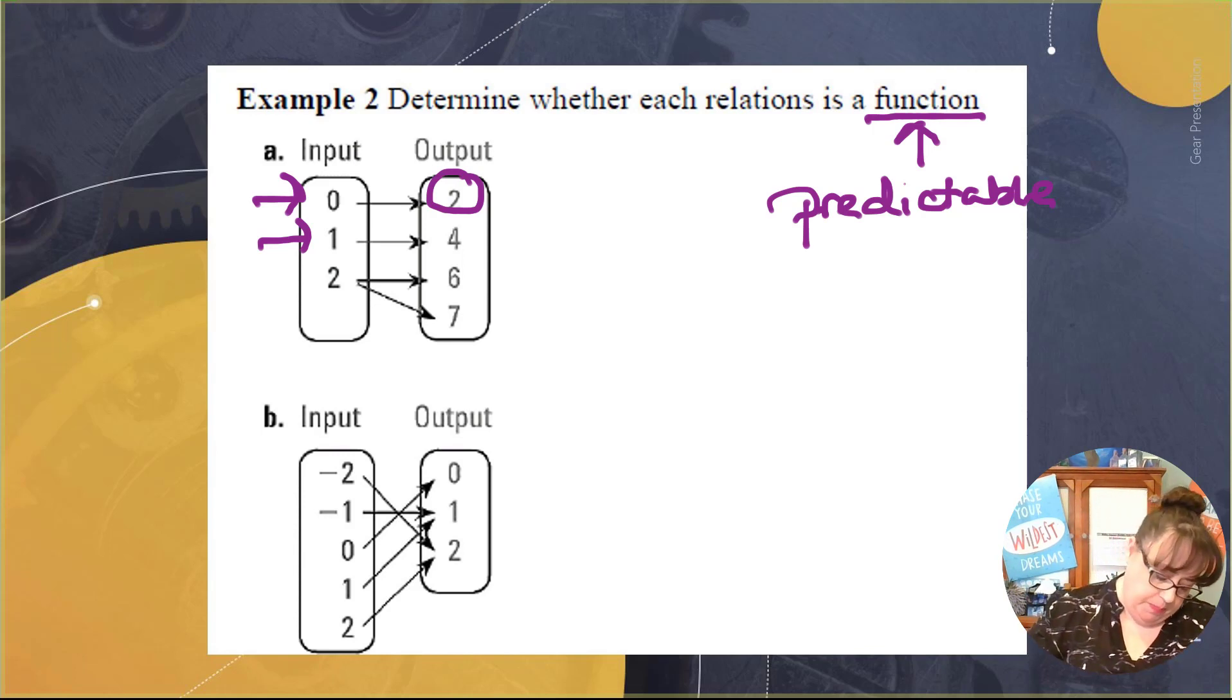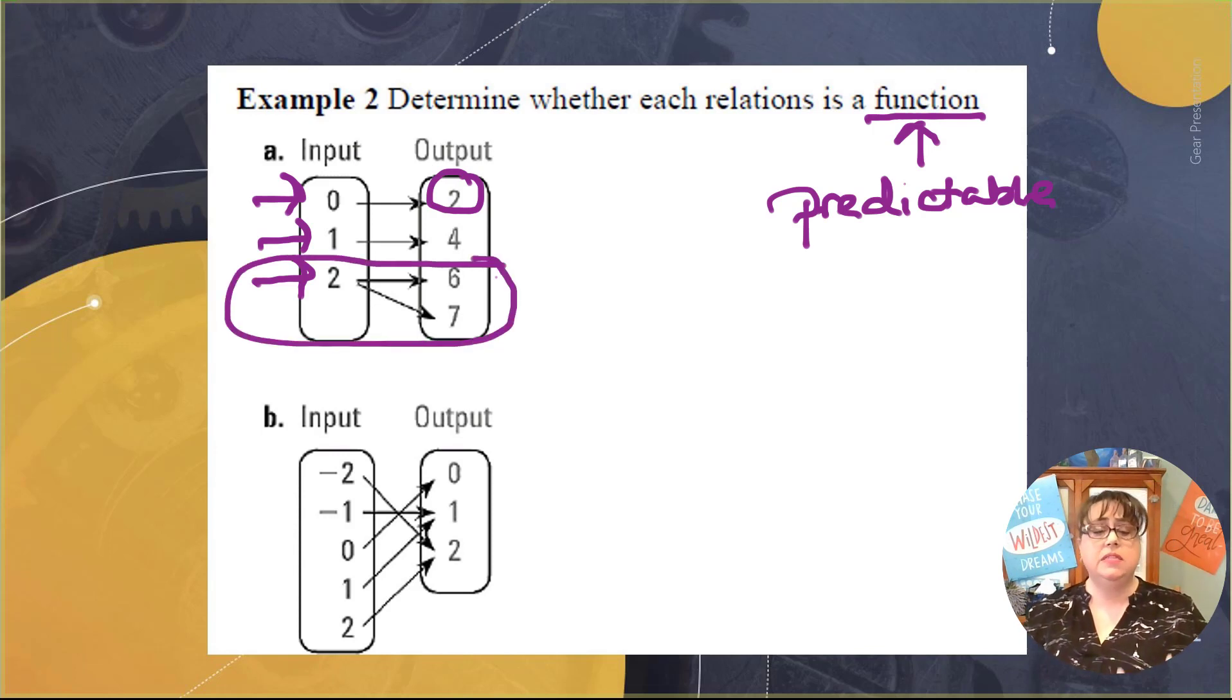Then I come along and I press button 2. Now I have a problem. When I press button 2, I don't know if I'm going to get a 6 or a 7. It is no longer predictable. This means it is not a function because I cannot predict what it is that I'm going to get. If it is not predictable, it is not a function. Function means it is predictable. I know what I will get every single time. This is not a function.